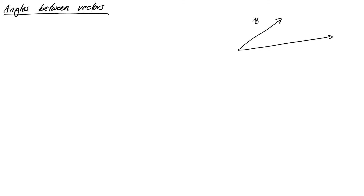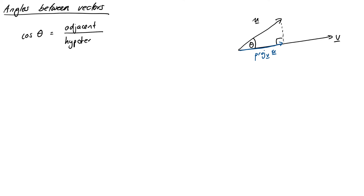We've built a nice right-angled triangle — at least in 2D and 3D — that we happen to now know all the sides of. We know the projection, we know u, and we know the difference, which is w. So we should take advantage of this to figure out the angle between the vectors u and v. By basic trigonometry, cosine of theta is going to be the adjacent of the triangle divided by the hypotenuse.